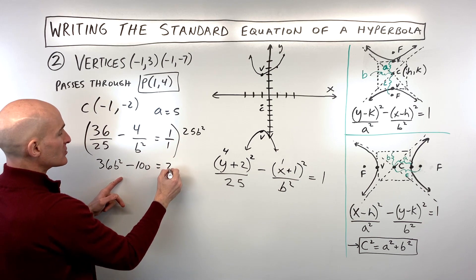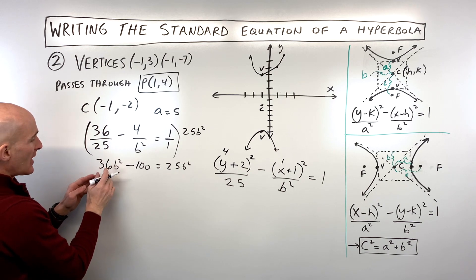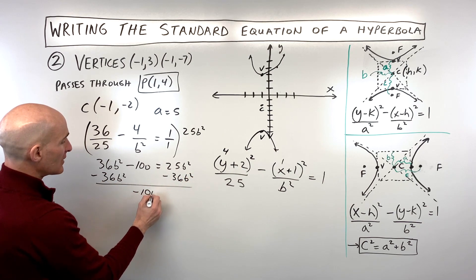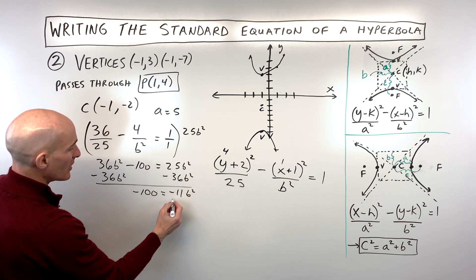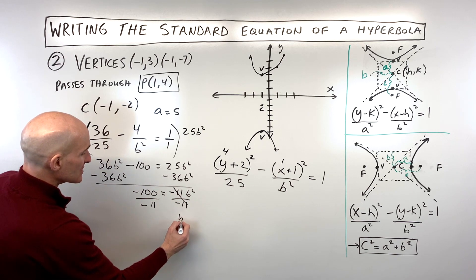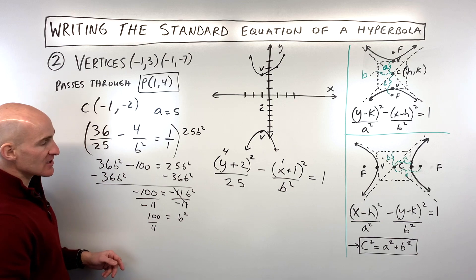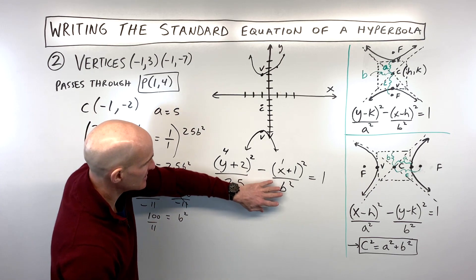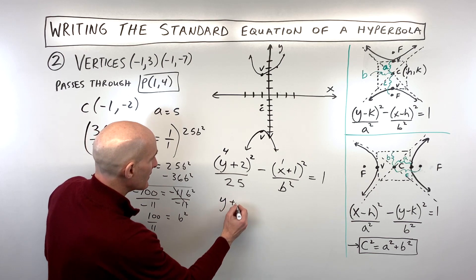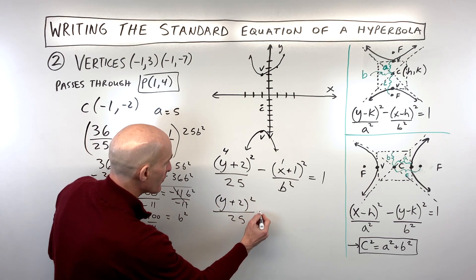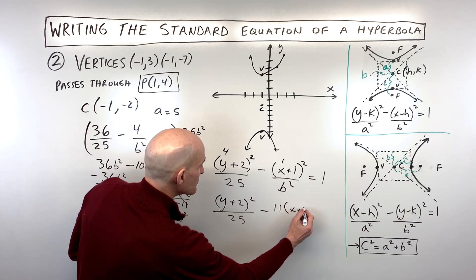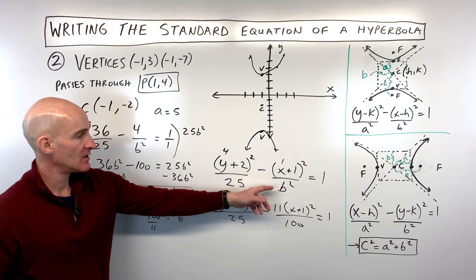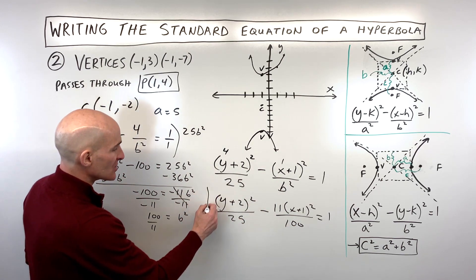Multiplying by 25b² gives 36b² - 100 = 25b². Subtracting 36b² from both sides: -100 = -11b², so b² = 100/11. We can write the standard form with b² = 100/11 in the denominator, or rewrite it more neatly as (y+2)²/25 minus 11(x+1)²/100 = 1. Either form is acceptable.